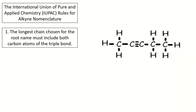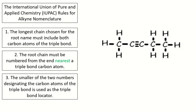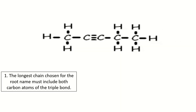Now let's try to identify the name of a structural formula of alkynes. We will follow the rules of IUPAC. First step: identify the longest chain. In our example, we only have one chain. Next, count the number of carbon atoms — we have 5 carbon atoms, so we use the prefix 'pent.' The structural formula has a triple bond, therefore it is an alkyne, and we will use the suffix Y-N-E.